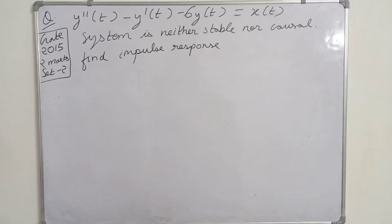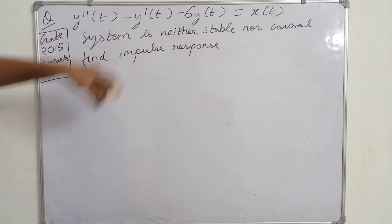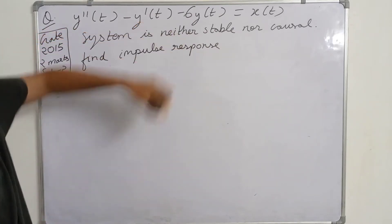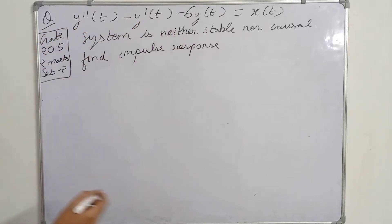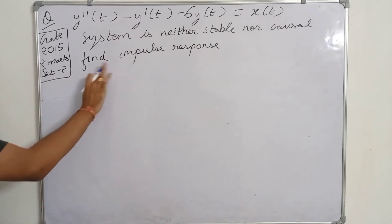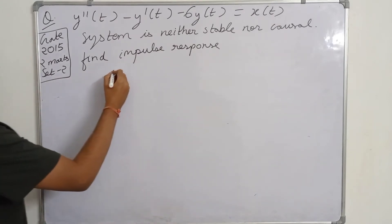We are solving a question from GATE 2015. It is worth 2 marks for Set 2 Electronics. The difference equation given is y''(t) minus y'(t) minus 6y(t) equals x(t), and we are given that the system is neither stable nor causal. We have to find the impulse response.